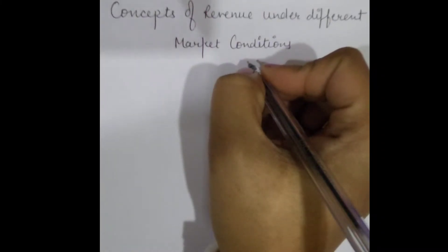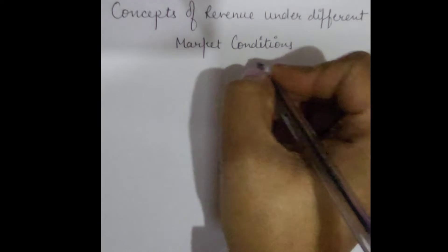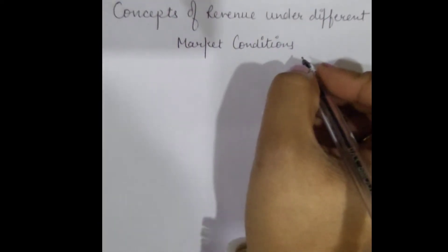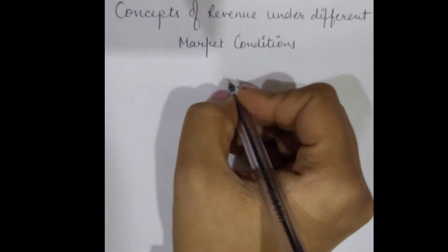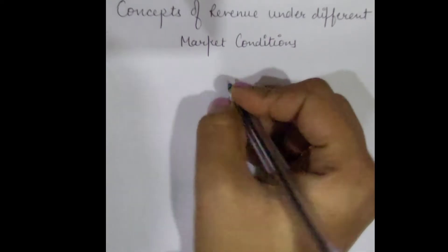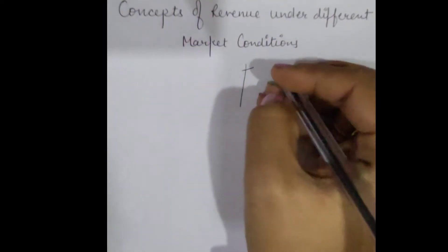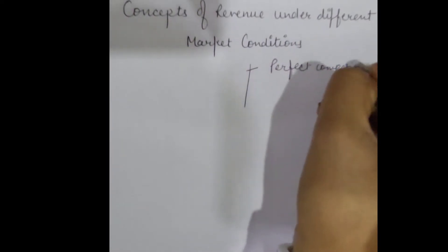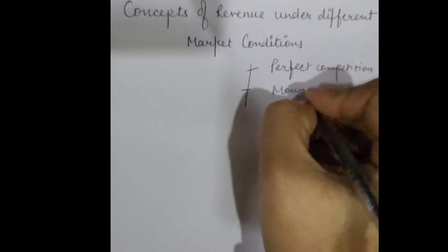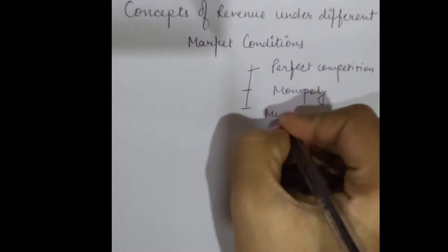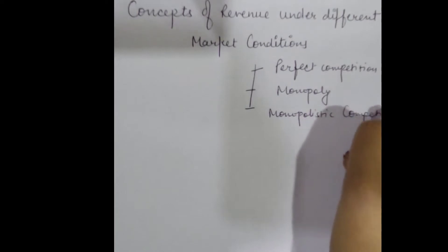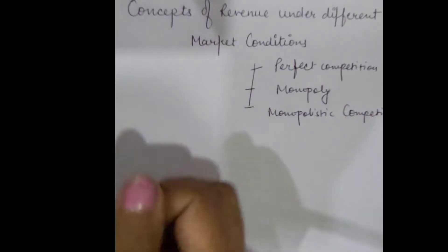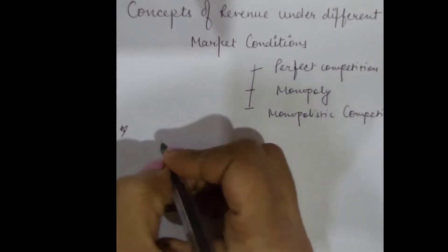Hello students, welcome to Envy Commerce Academy. Our today's topic is concepts of revenue under different market conditions. Total revenue, average revenue, and marginal revenue behave differently in different market situations. The principal forms of markets that we are going to discuss here are perfect competition, monopoly, and monopolistic competition.